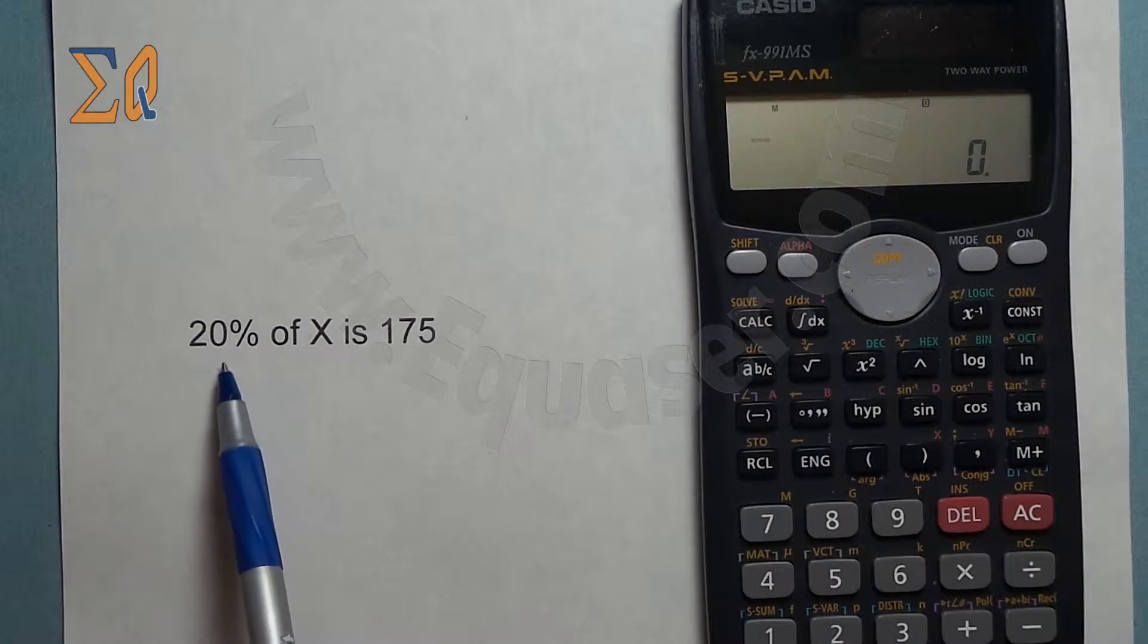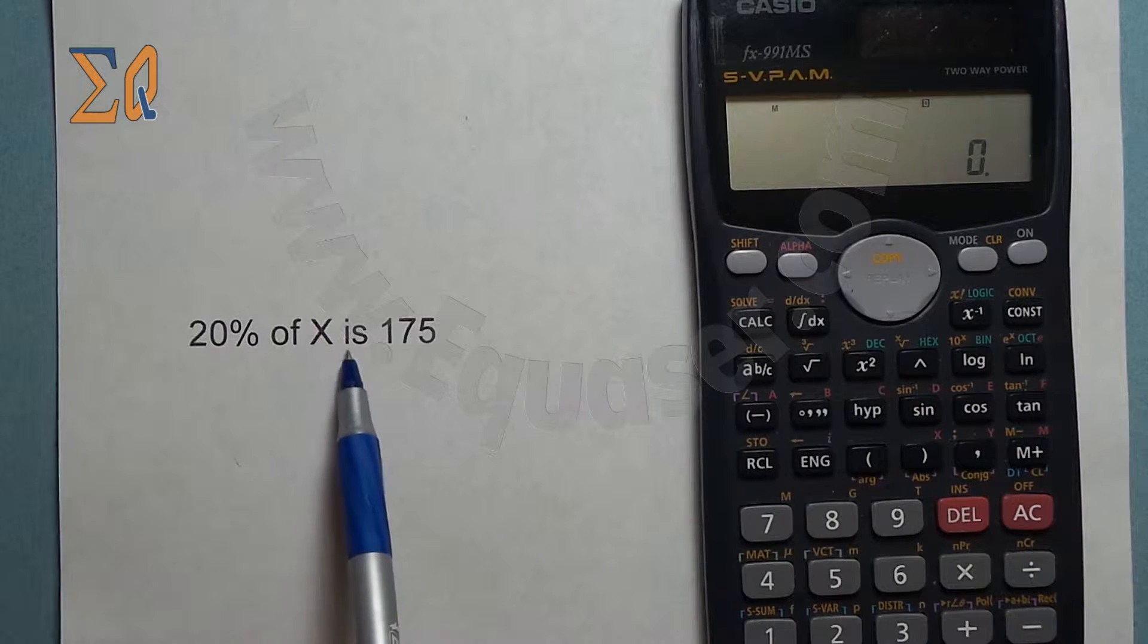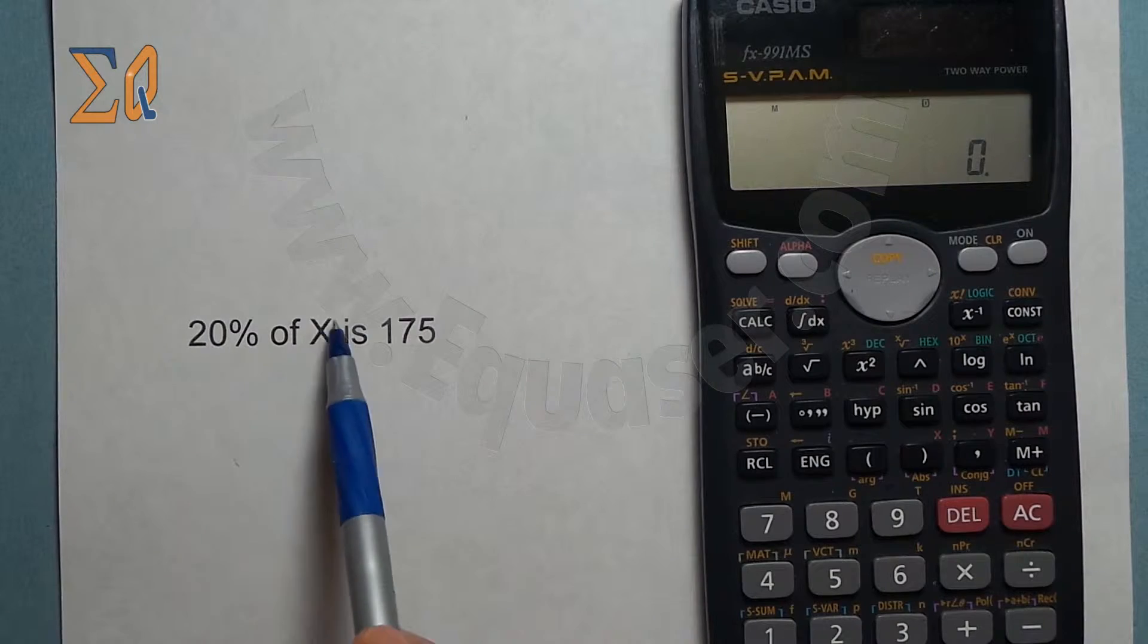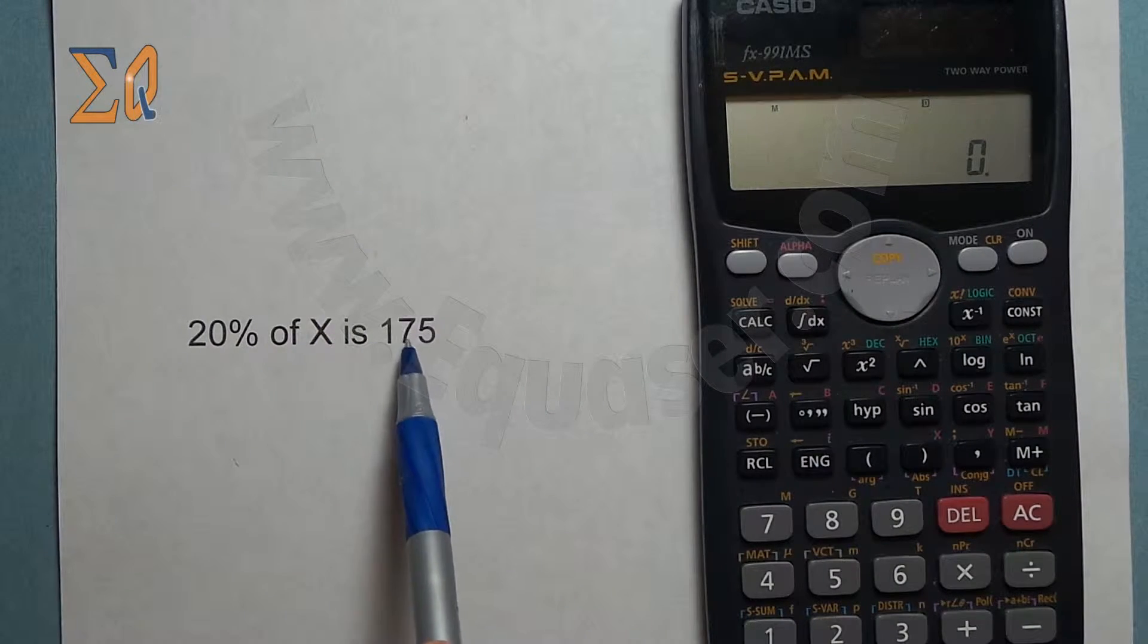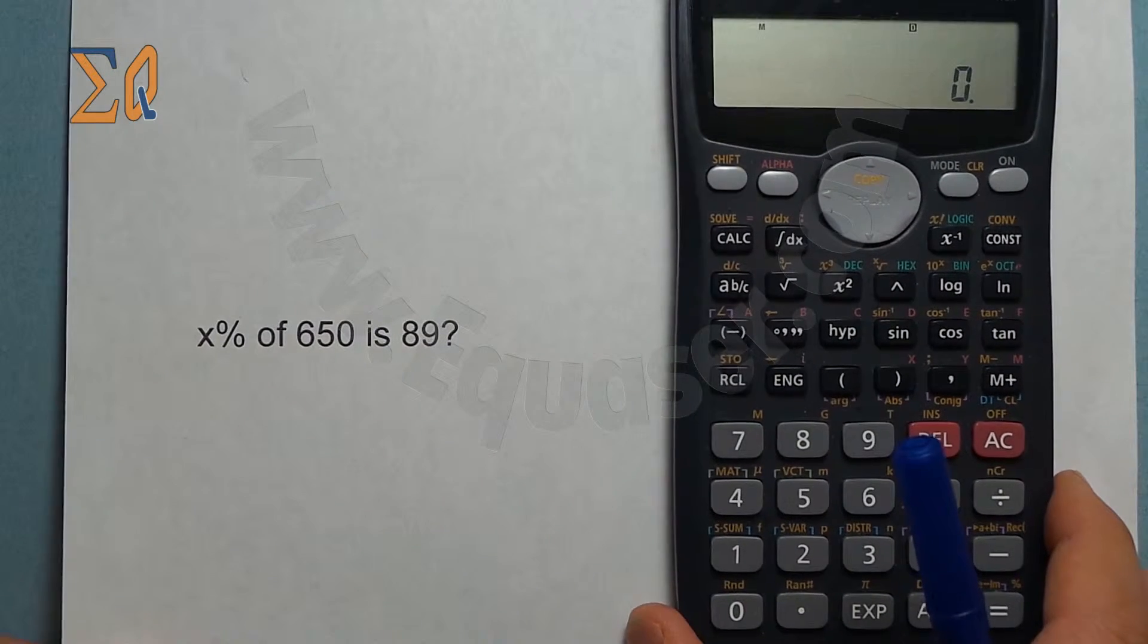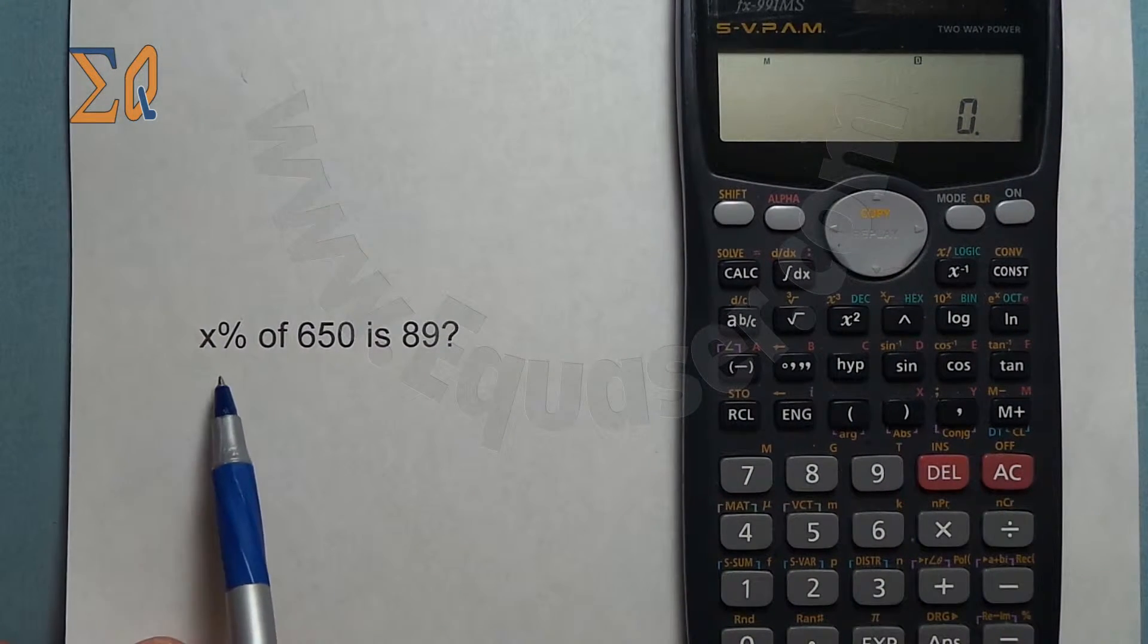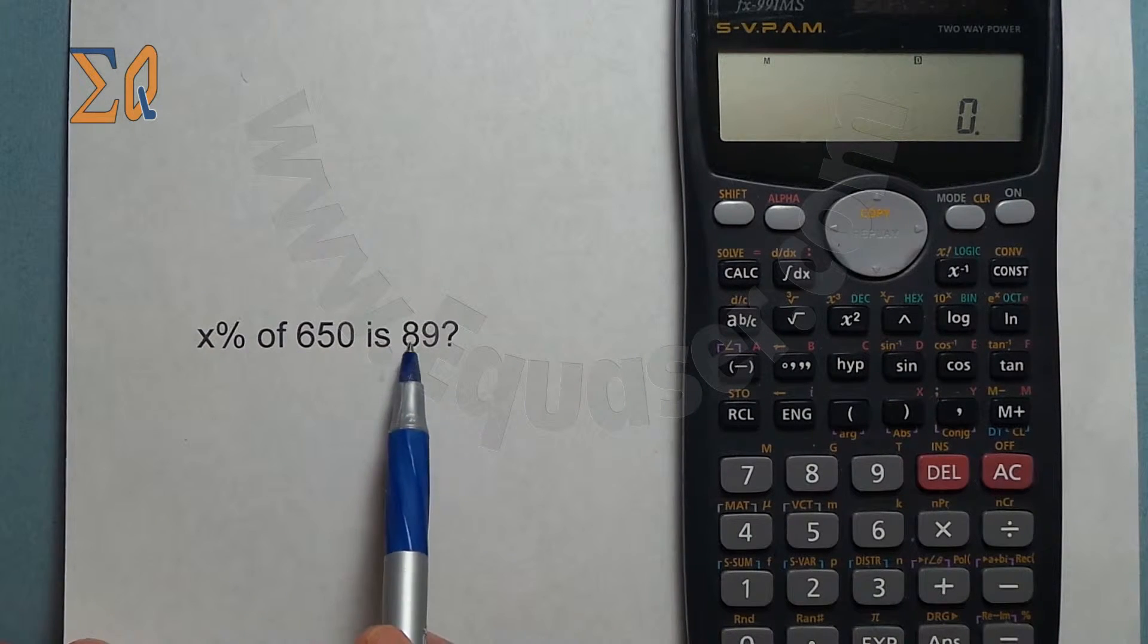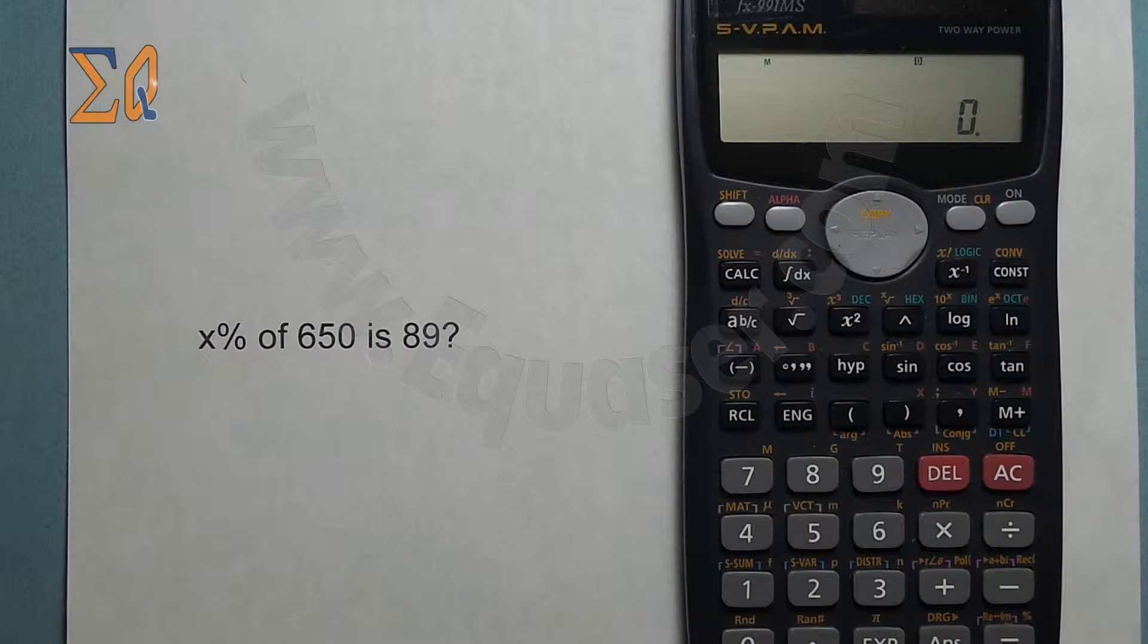20% of X is 175, so 20% of what value is 175? The third way that the question might be asked is: some percent, X percent, of 650 is 89. How can we solve it?